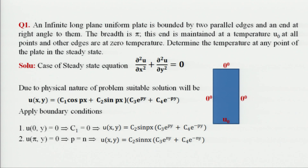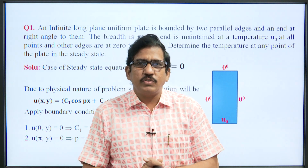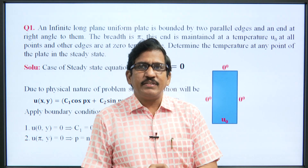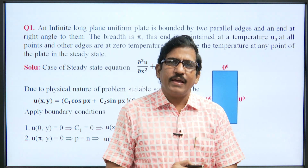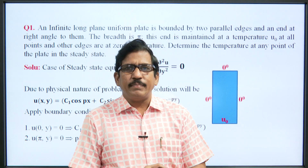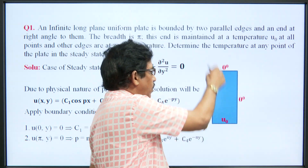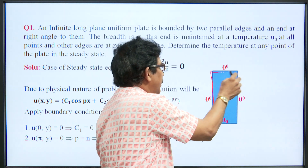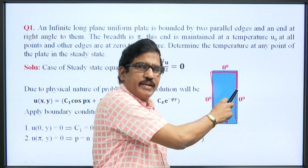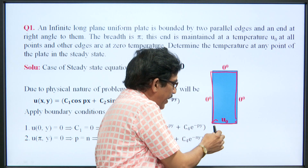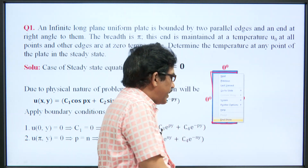Consider this problem: an infinitely long plain uniform plate is bounded by two parallel edges and an end at right angles to them. The breadth of this section is π and is maintained at u₀ degrees temperature at all points, while all other edges are maintained at 0 degrees temperature. We have to find the temperature of the plate at any point.